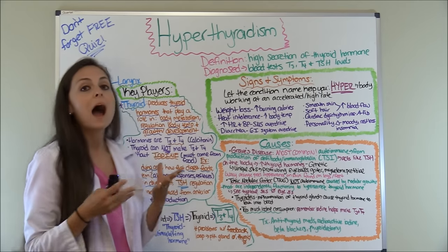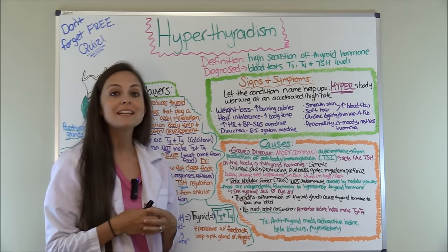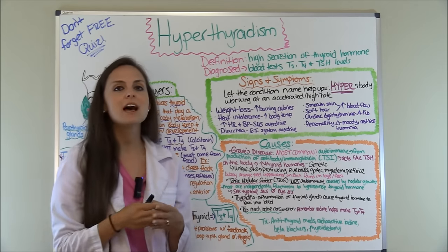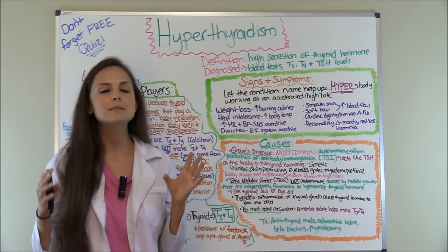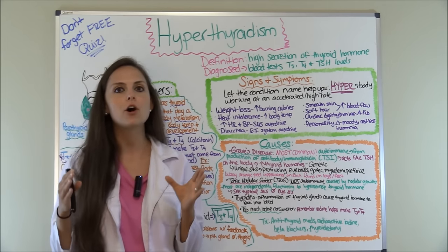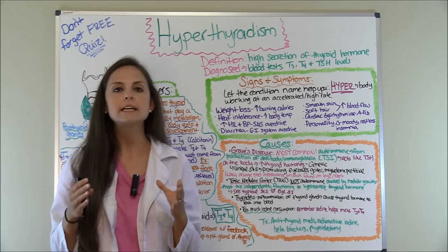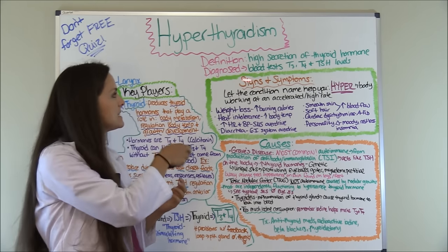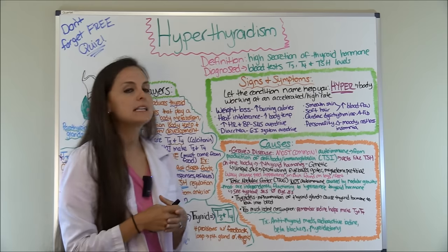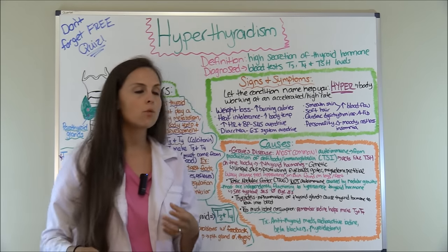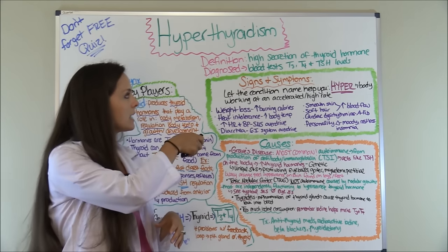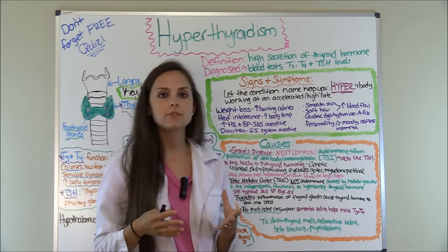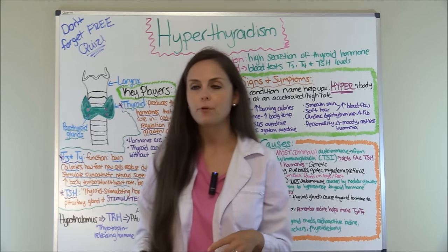First, let's define what hyperthyroidism is. It is a high secretion of thyroid hormone — the body is pumping out a lot of thyroid hormones, which wreaks a lot of havoc on your body. It is diagnosed with a blood test that the physician orders to check your T3, T4, or TSH levels — the thyroid stimulating hormone level.